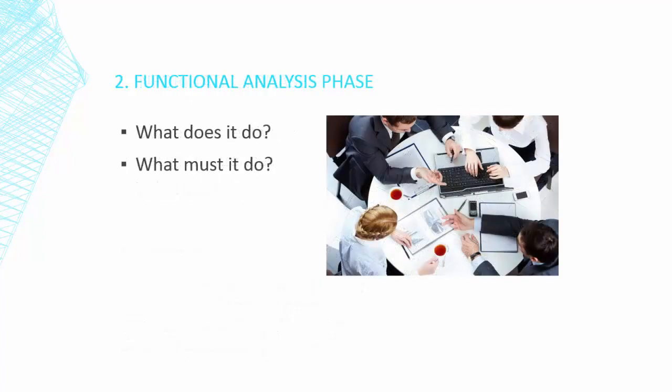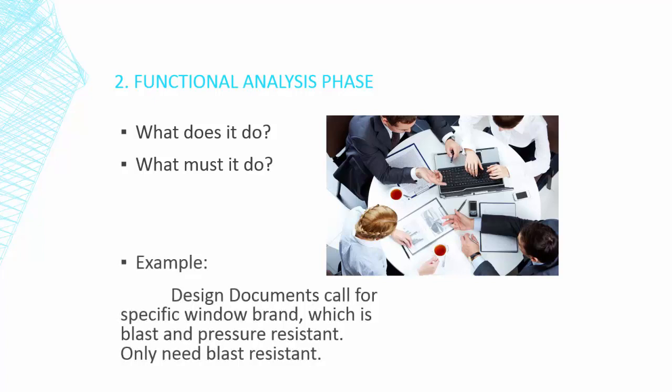Now we have this information at hand, we'll move on to the next phase, the functional analysis phase. Here the team looks at each potential system in question and asks two important questions: What does the system do and what must the system do? It's here we'll start to see the potential for savings. For our previous example of the blast-resistant windows, the design documents call for a specific window brand. This particular window brand happens to be not only blast-resistant but pressure-resistant as well. The owner's objective is to only have blast-resistant windows. So already here in step two, we can see that we have some potential for savings on this project.